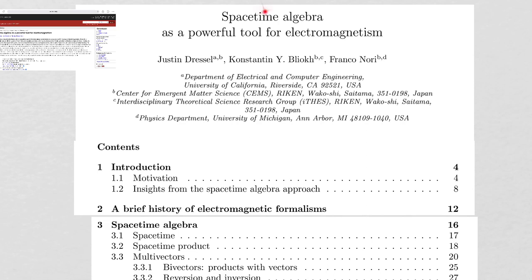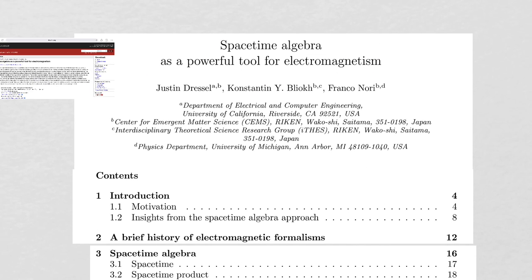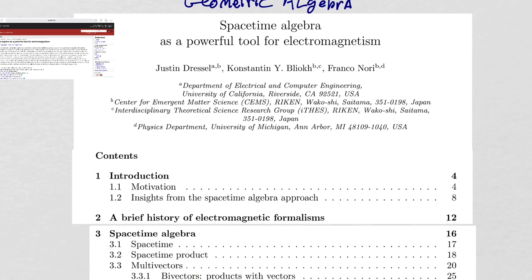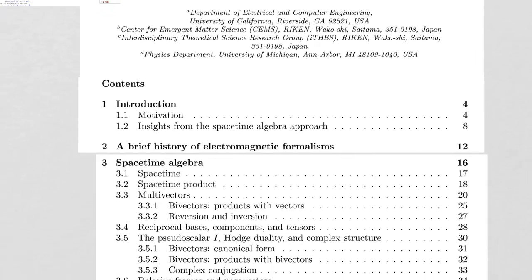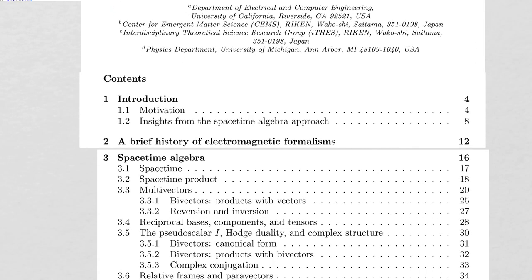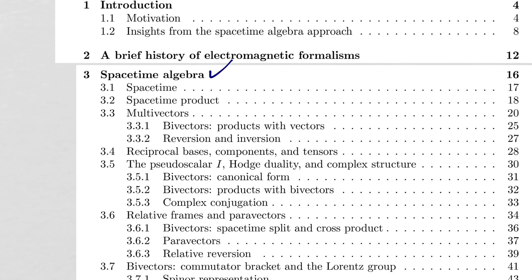Let's get back to work at our study of space-time algebra, which is also going to be a study of geometric algebra. Space-time algebra is an instance of geometric algebra — that's the best way to say it. In our last lecture, we basically got through the introductory section on space-time algebra, so now we are going to move into these two sections: space-time and space-time product.